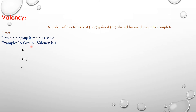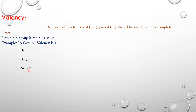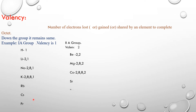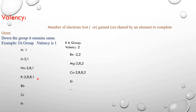For example, consider the 1A group. The valency is 1 for all elements. Hydrogen: 1s¹. Lithium: 1s², 2s¹. Sodium: 2, 8, 1. The outermost shell always has 1 electron. If you go down the group, you will find one valence electron only. So the valency remains the same going down the group.